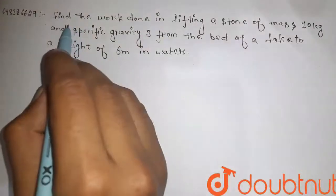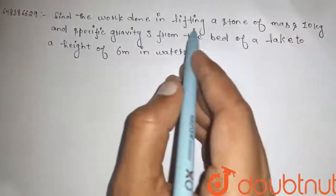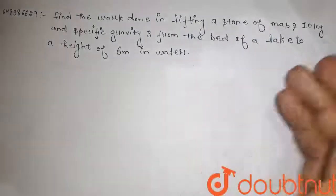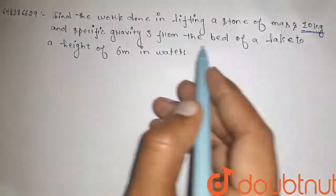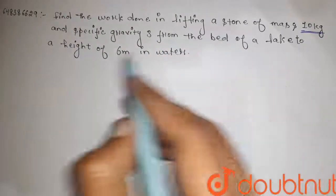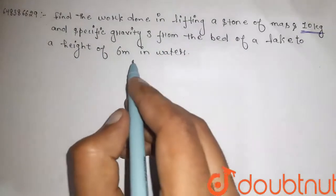Hi guys, here is the question. Find the work done in lifting a stone of mass 10 kg and specific gravity 3 from the bed of a lake to a height of 6 meters in water.